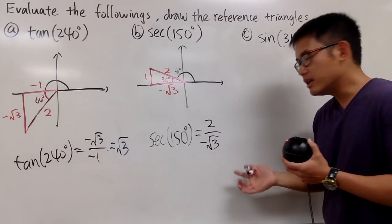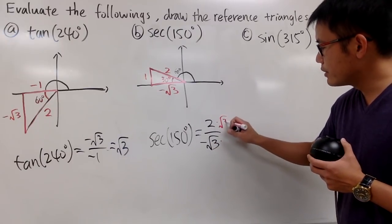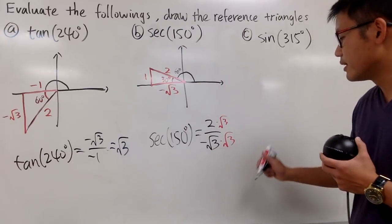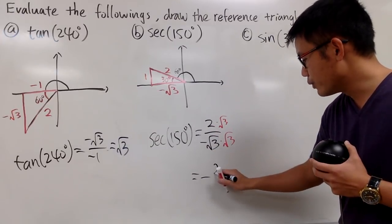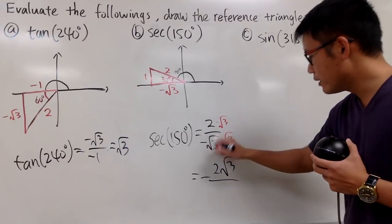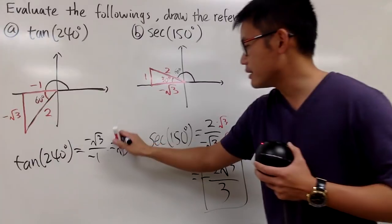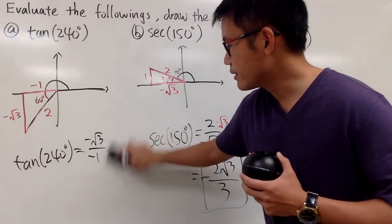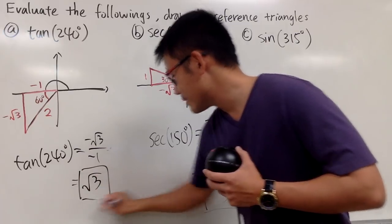And once you have this, you can just multiply the bottom and the top by square root of 3. You can rationalize the denominator. So all in all, we have negative and then 2 square root of 3 over in the bottom here is just a regular 3. So here is the answer for that.